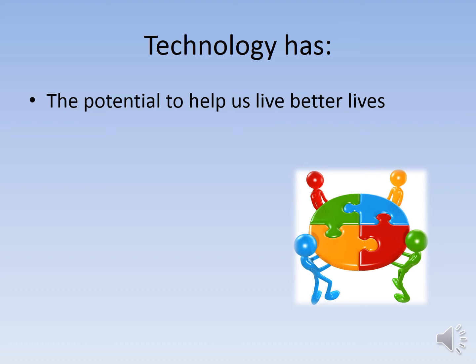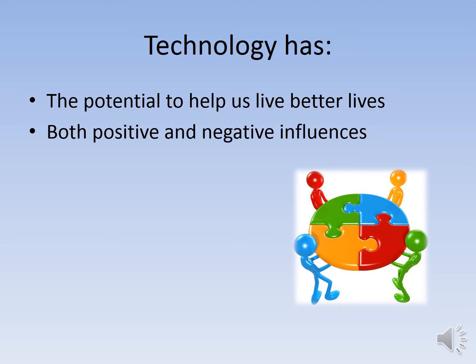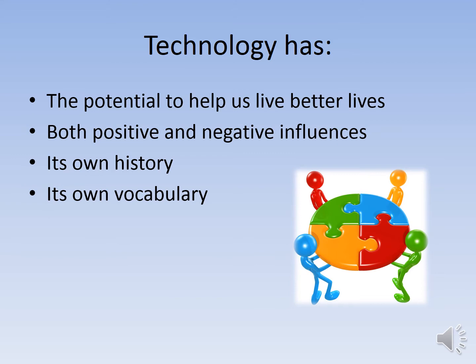Technology has the potential to help us live our lives better. It has both positive and negative influences. For example, we created the automobile — the positive is that it helps us get places faster. However, a negative influence could be that gas-powered cars release carbon dioxide or CO2 emissions into the atmosphere. Technology also has its own history. For example, the automobile didn't start as what it is today — it started as a two-stroke engine, then a four-stroke, and now we have eight-cylinder and twelve-cylinder engines. So technology has its own history.